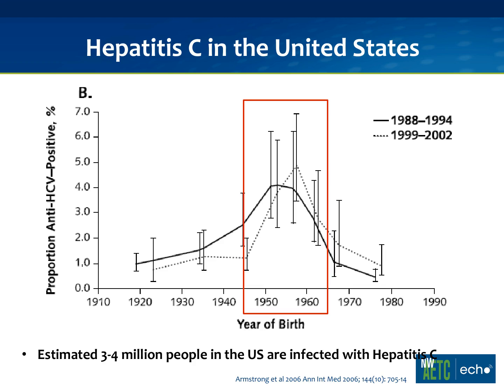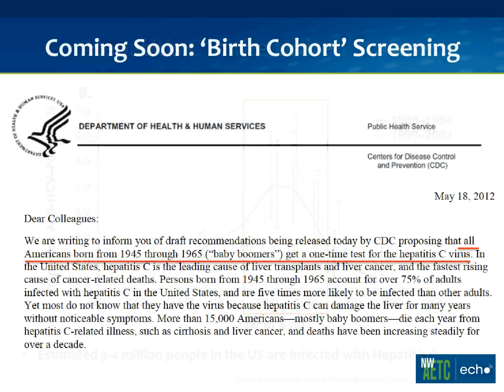The age groups most likely to have hepatitis C are really the baby boomers. If you were born between 1945 and 1965, the chance of having hepatitis C is much higher than the general population — around 2% overall and approaching 5% in certain ethnic groups. A lot of that was driven by experimentation with drugs in the late 1960s and early 1970s. If you look at the whole United States population, two-thirds of the people who have hepatitis C were born between 1945 and 1964.